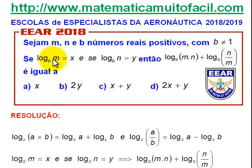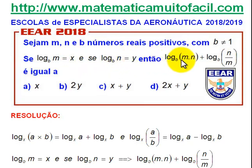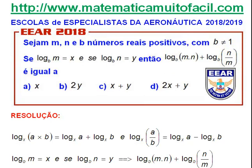Se o log na base B de M é igual a X, e se o log na base B de N é igual a Y, então o log na base B do produto MN mais o log na base B do quociente M sobre N é igual a 4 itens. Vamos ver qual deles é o verdadeiro?